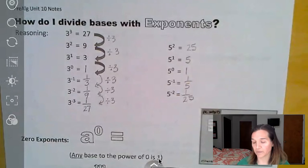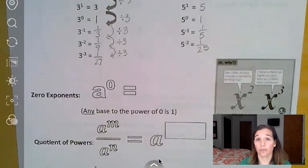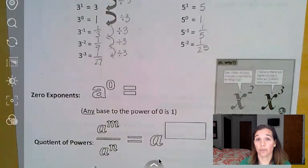And so that leaves us with this rule here, zero exponents, a to the zero power, any base to the power of zero is one.